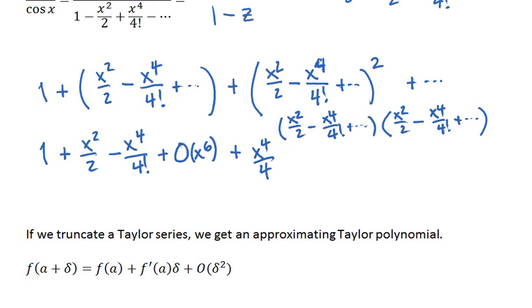And then I have another negative x to the fourth over 4 factorial times x squared over 2. So I get minus 2 of those times x to the sixth over 2 times 4 factorial. 4 factorial is 24, so this is 48.